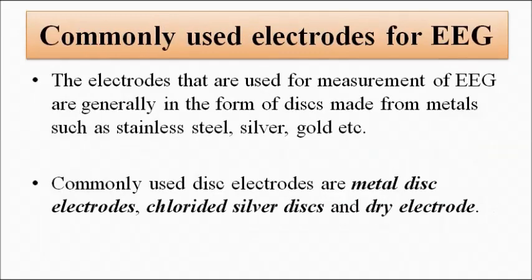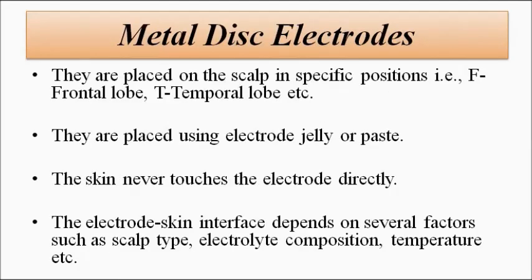Coming to the electrodes used for electroencephalogram, there are 3 most commonly used electrodes in EEG. Two of those are of disc type: metal disc electrodes and chlorided silver discs. The third is the dry electrode, which is not exactly a disc type but very close to it. We will discuss all three of these electrodes in this video.